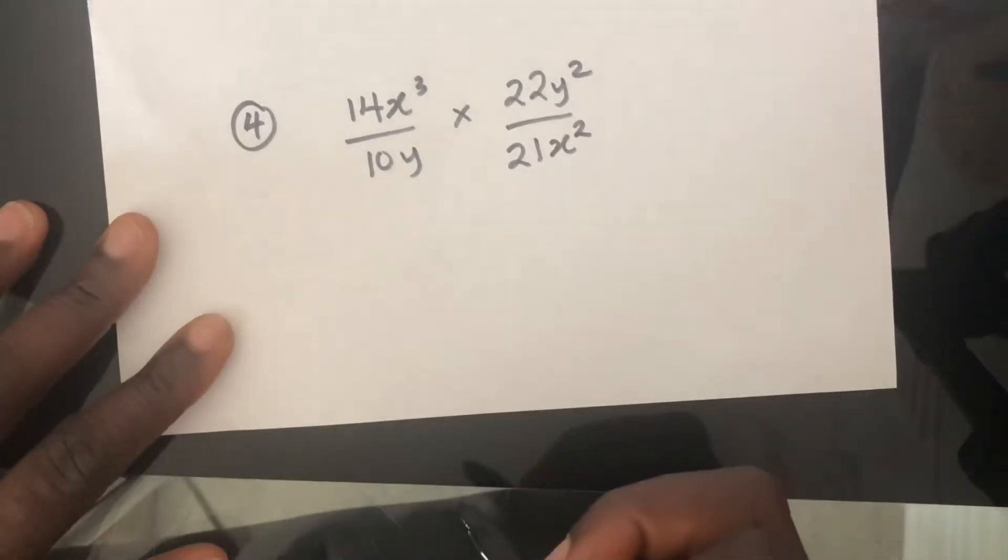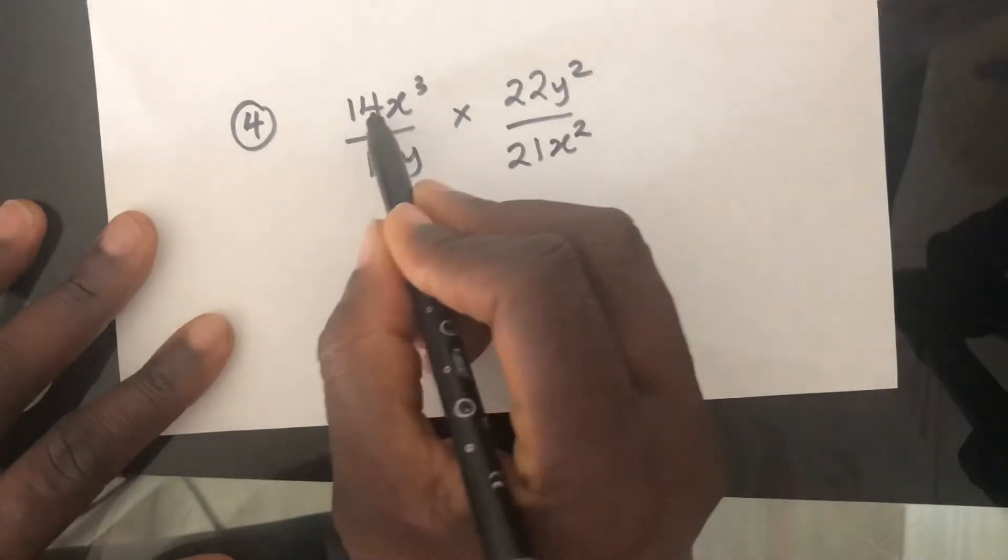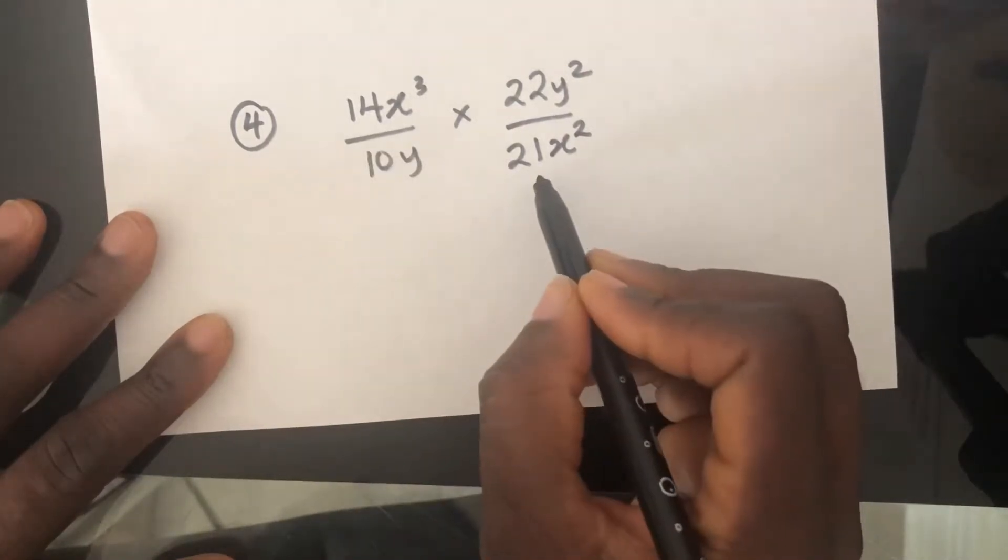Okay. Now having a look at this one, it looks all over the place, but we can start to think about how we can cancel things down. I think 7 can go into 14 and 7 can go into 21.